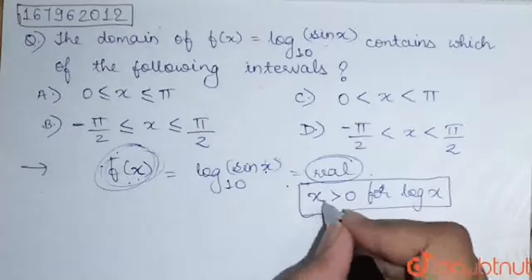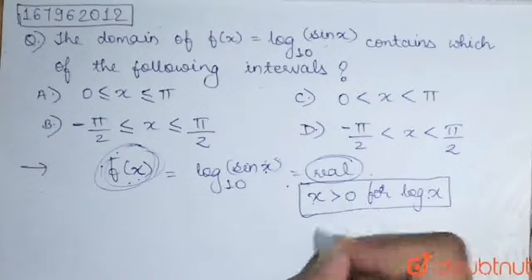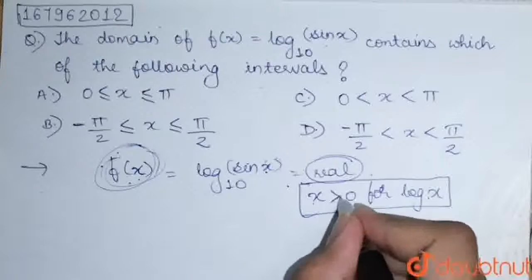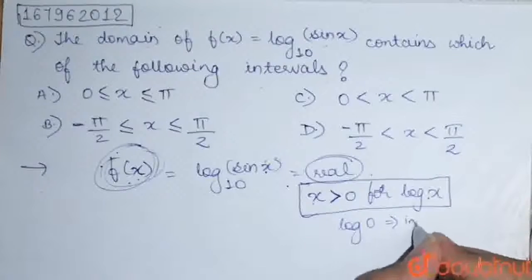Now, as we know that for log x, x should be greater than 0. Not equal to, only greater than 0. Log 0 is also invalid.